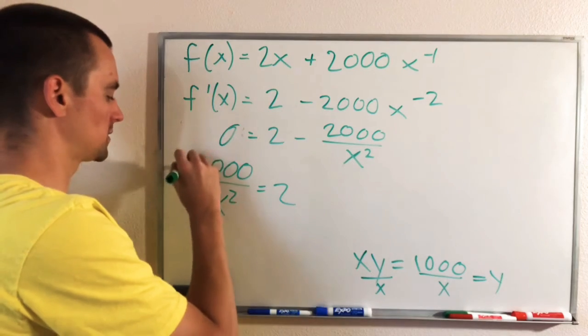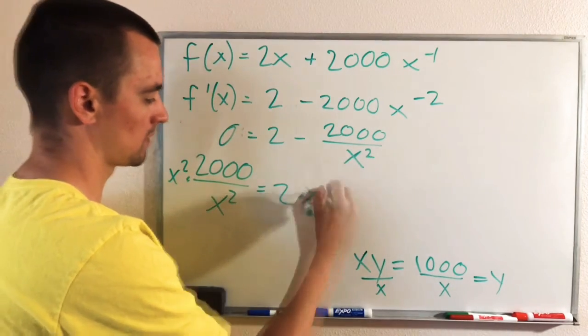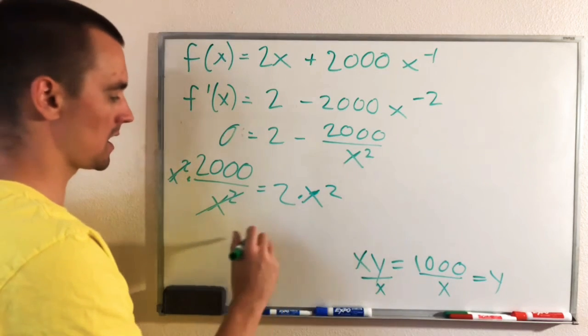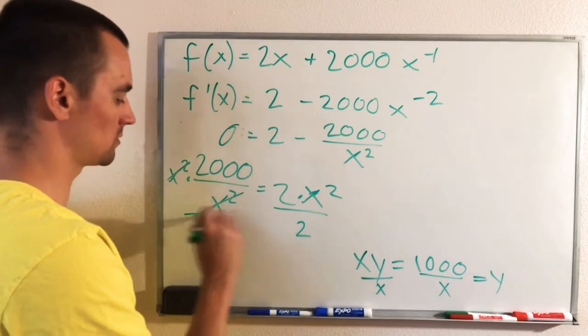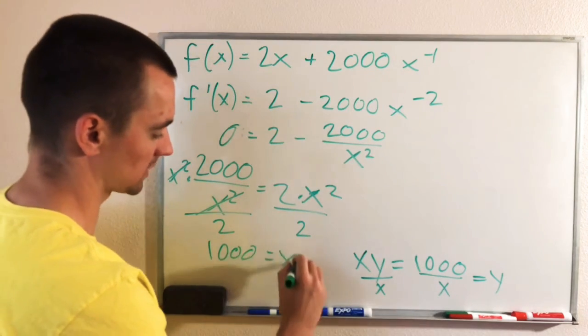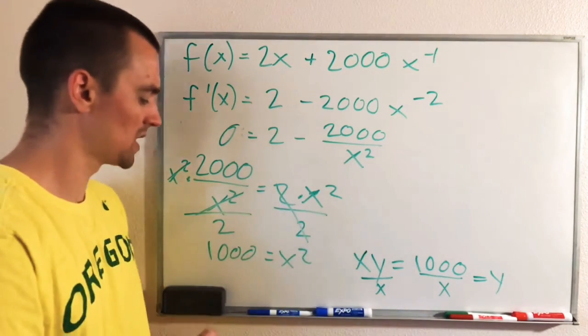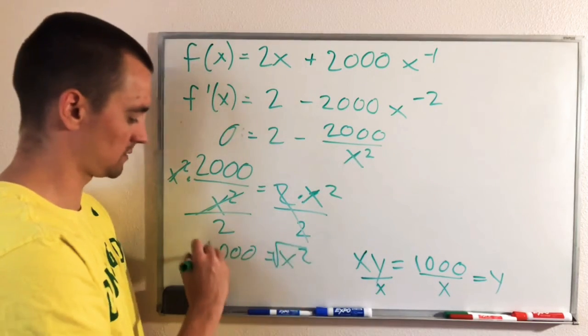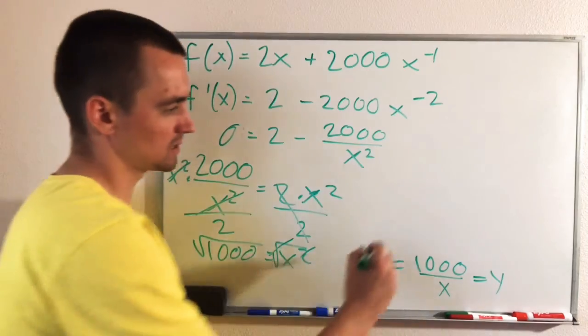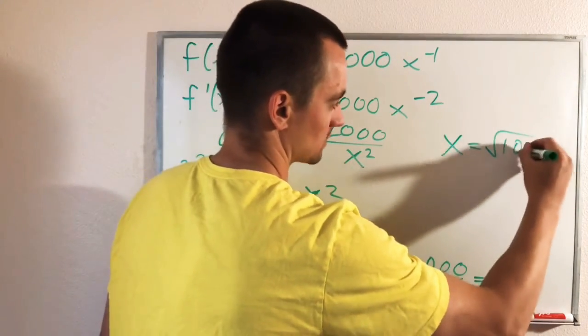Then we can multiply both sides by X squared to cancel this X squared with this X squared. And then we can divide both sides by 2. So that'll give us 1,000 equals X squared because those will cancel. And then we can just square root both sides to cancel the squared over here. So that'll tell us X equals the square root of 1,000.